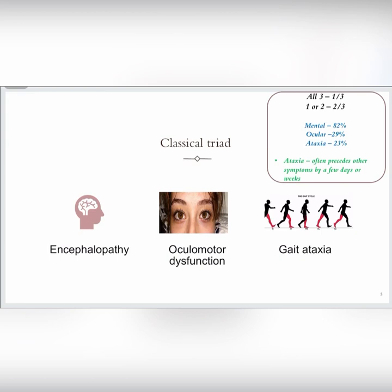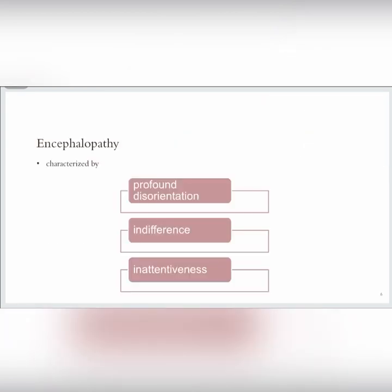In percentage terms, mental changes occur in 82 percent, ocular symptoms in 29 percent, and ataxia in 23 percent. Ataxia often precedes or follows other symptoms by a few days or weeks. Encephalopathy is characterized by profound disorientation, such as the patient may not know where he is or when it is now, as well as indifference and inattentiveness, which means he cannot focus anymore.